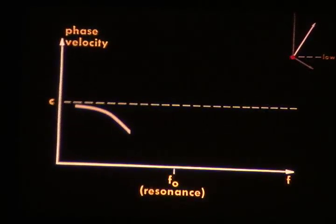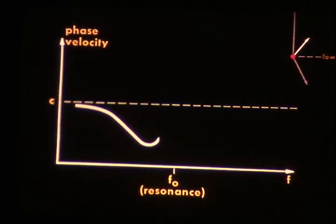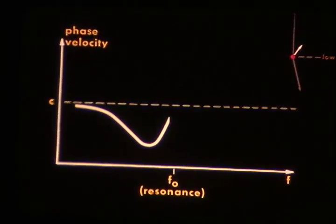As we increase frequency further toward the resonance value, F0, the phase delay reaches a maximum and then it decreases. Correspondingly, the phase speed goes through a minimum.